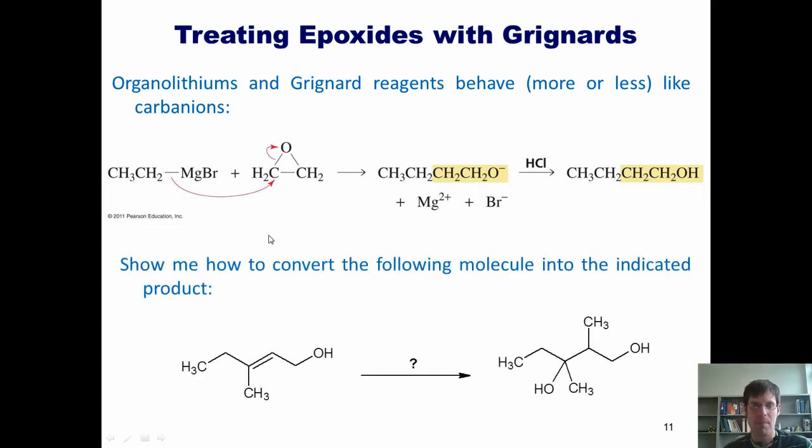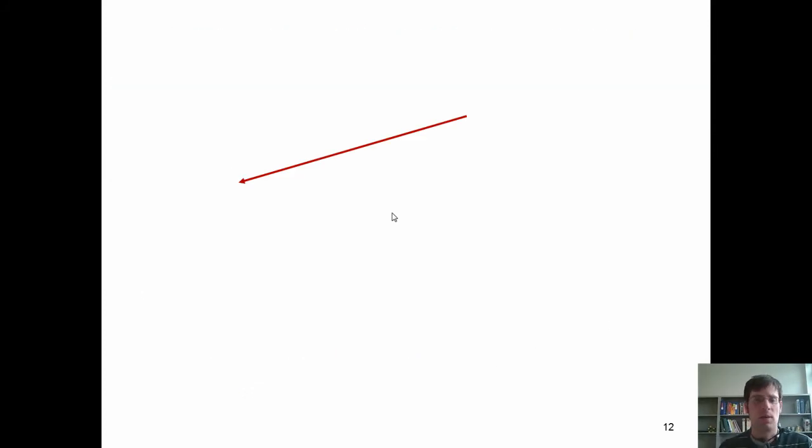Now, let's test our knowledge with this sample question. Show me how to convert the following molecule into the indicated product. Okay, so I'm going to show you the answer to this right now. To begin with, what I do is I take my starting material, and if I treat it with MCPBA, it will generate this epoxide. Now, I've shown stereochemistry here, but technically, this is a completely achiral reagent. So, I'm going to get both enantiomers in a 50-50 mix.